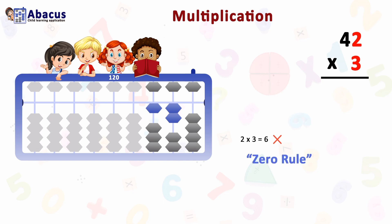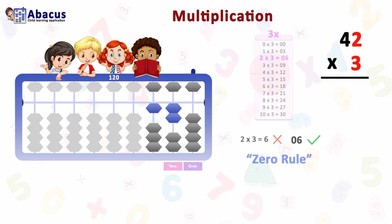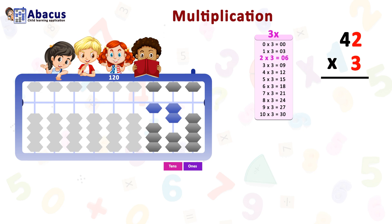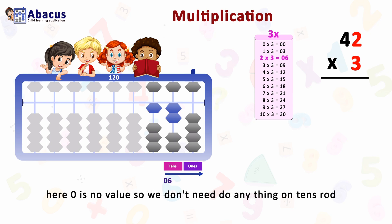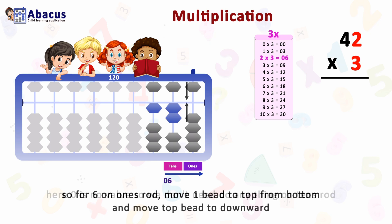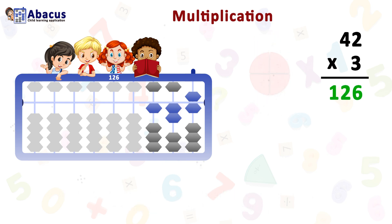Six is a single digit, so we apply the Zero Rule: whenever you get a single-digit number, prepend a zero. So six becomes zero-six. For zero-six, we look at the last two rods — tens and ones. Zero has no value so we do nothing on the tens rod. For six on the ones rod, move one bead up from the bottom and move the top bead downward. The answer is 126.